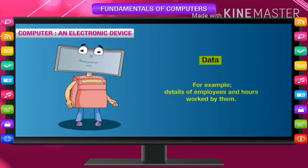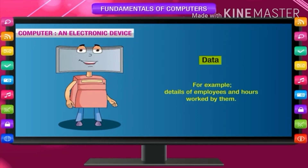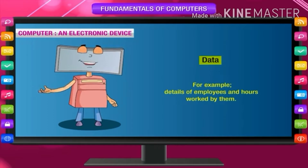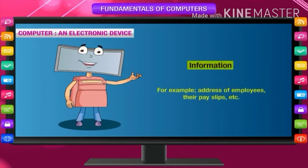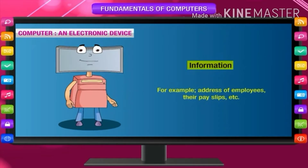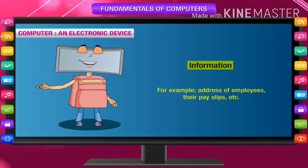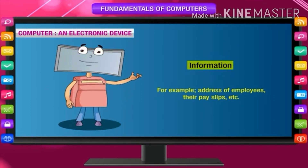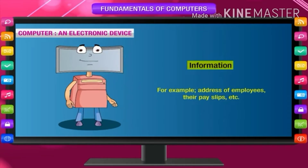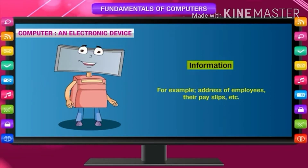Data: Raw facts that have been collected but not organized are known as data. For example, details of employees and hours worked by them. Information: When data is organized in a useful way, it is called information. For example, addresses of employees, their pay slips, etc. Information must be accurate, complete, and should be given at the right time.